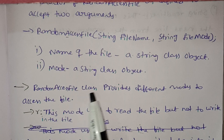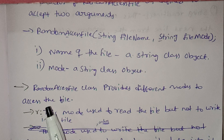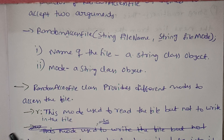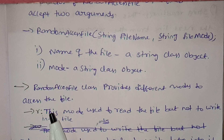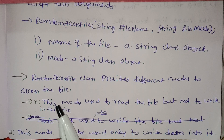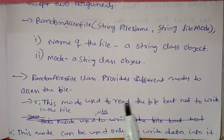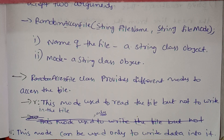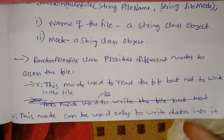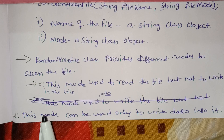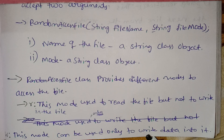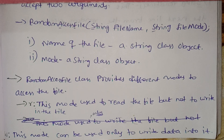Random access file class provides different modes to access the file. There are two modes. The first is 'r' — read mode — which is used to read the file but not to write. If you open in read mode, you can only read. The second is 'w' — write mode — which can be used only to write data into the random access file.